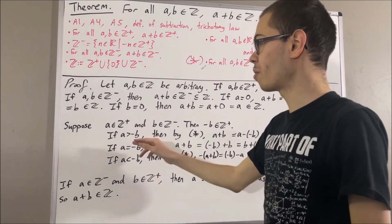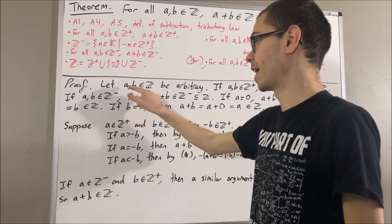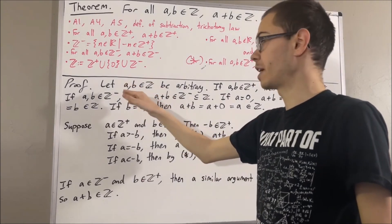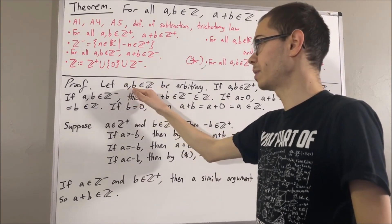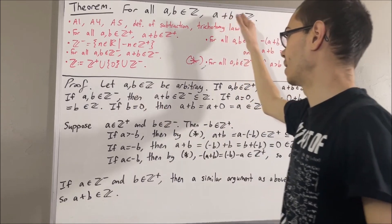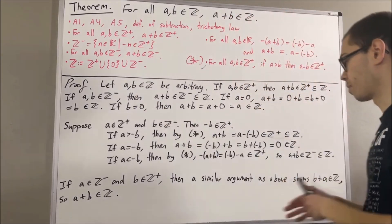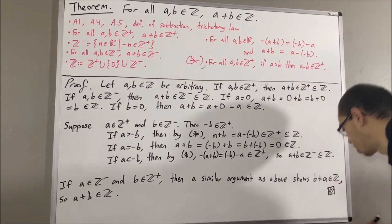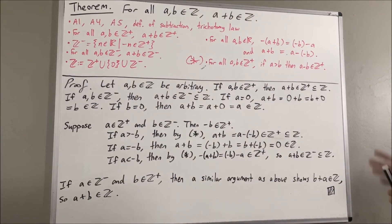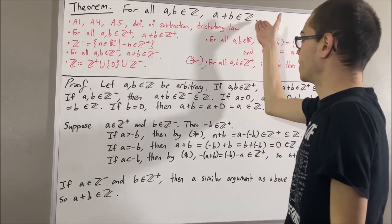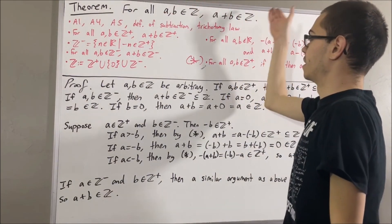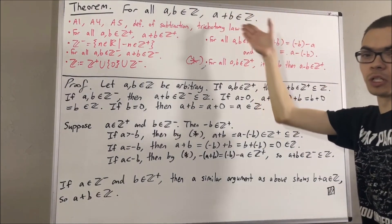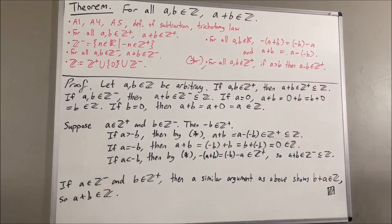At this point we have considered all possibilities of a and b, so we have shown that given any two integers a and b, a plus b is an integer. This completes the proof. Another way of putting this is to say that the set of integers is closed under addition.